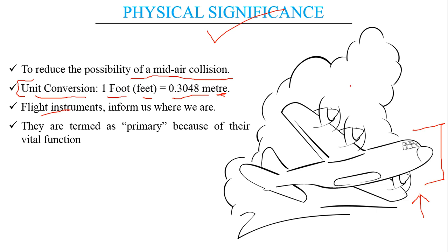Flight instruments basically inform us where we are — they act as our eyes and help in navigation, because out there we don't have sign boards or someone to ask for a route. We need to know where we are and at what speed we are travelling, which helps us know whether we are proceeding in the right direction. There are several other instruments, but these six are termed primary flight instruments because of their vital function — even if all other systems fail, these six instruments are needed for an aircraft to navigate to a particular location.